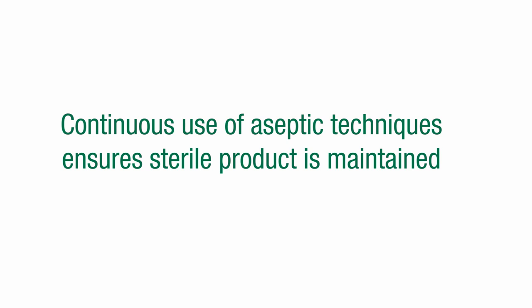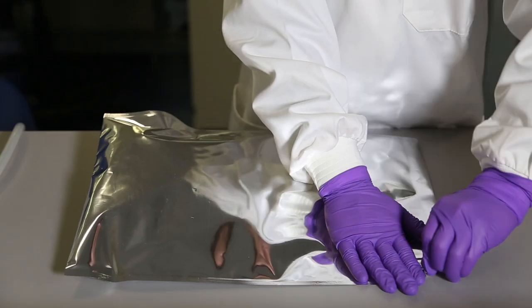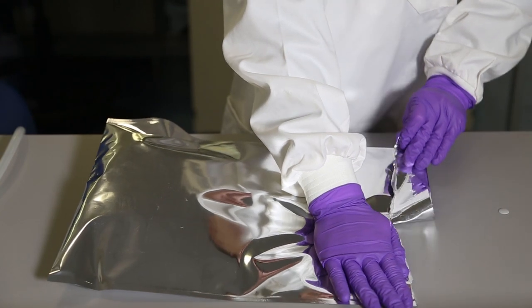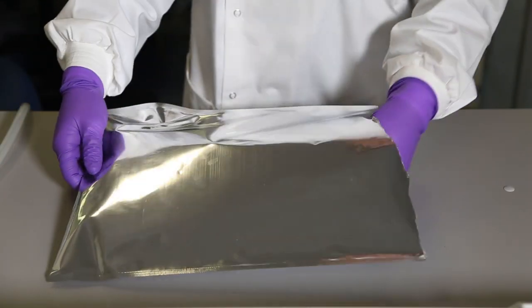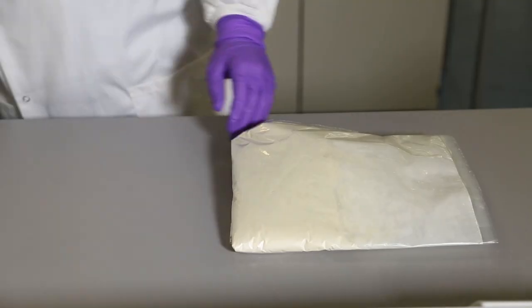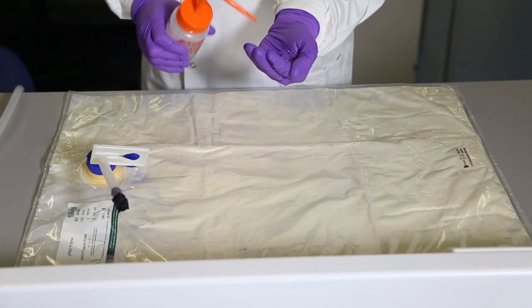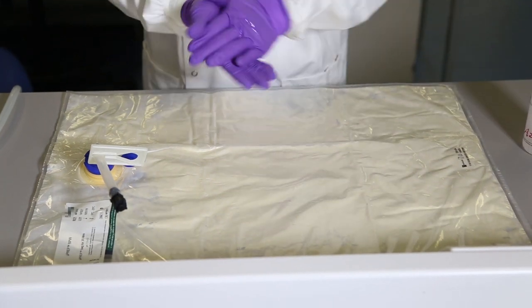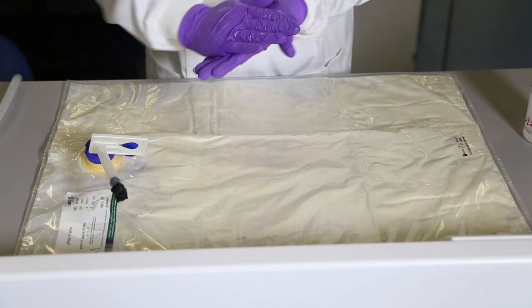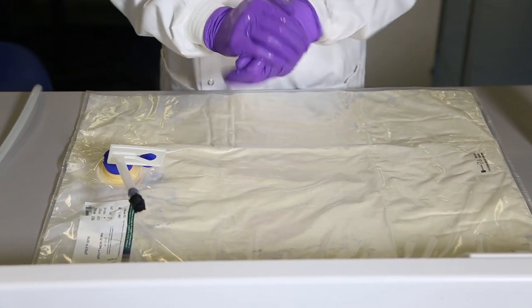The continuous use of aseptic techniques ensures a sterile product is maintained. Pull from one side across to the other to rip open the foil packaging. Pull out the MicroPrep bag and unfold on a clean, flat surface. It is important to note: before handling the connectors on the bag, application of alcohol or any other common laboratory hand sanitizing lotion to your gloves is important.